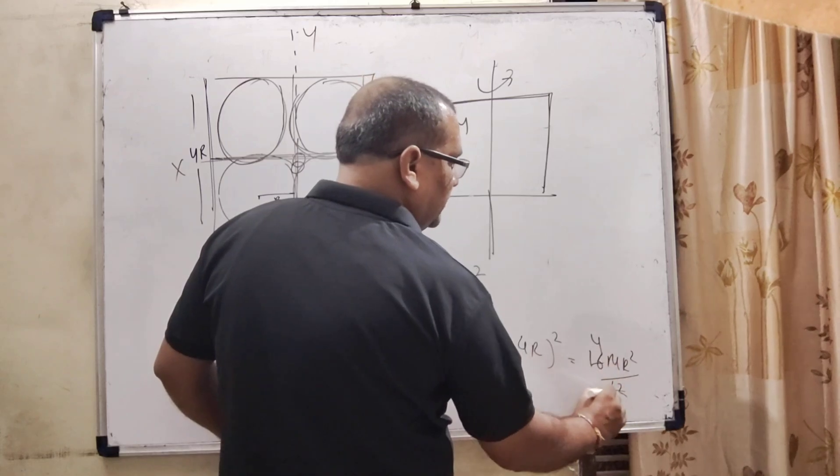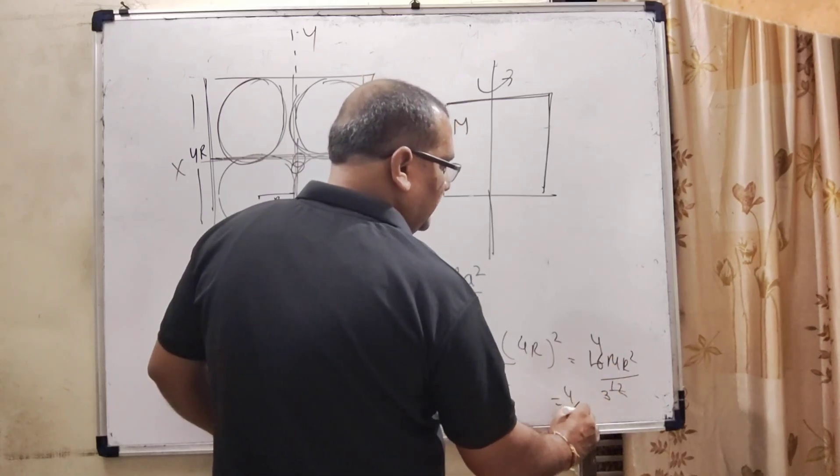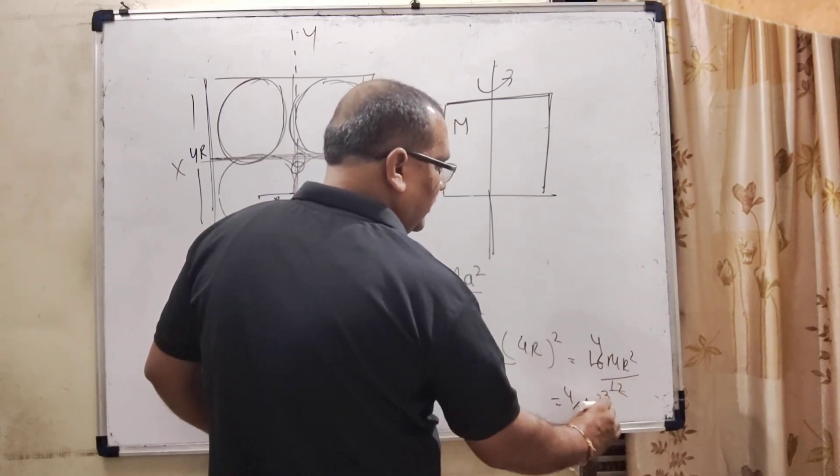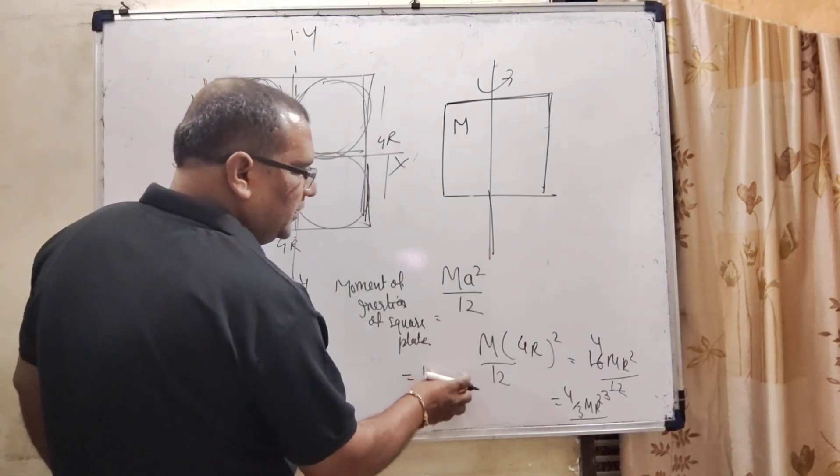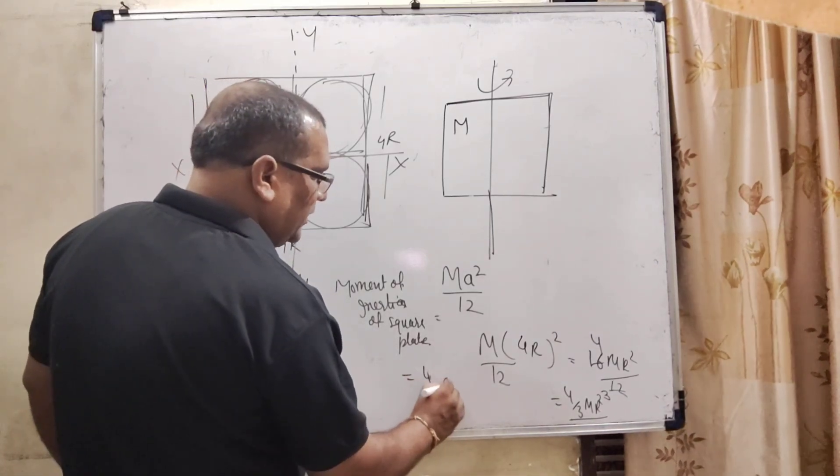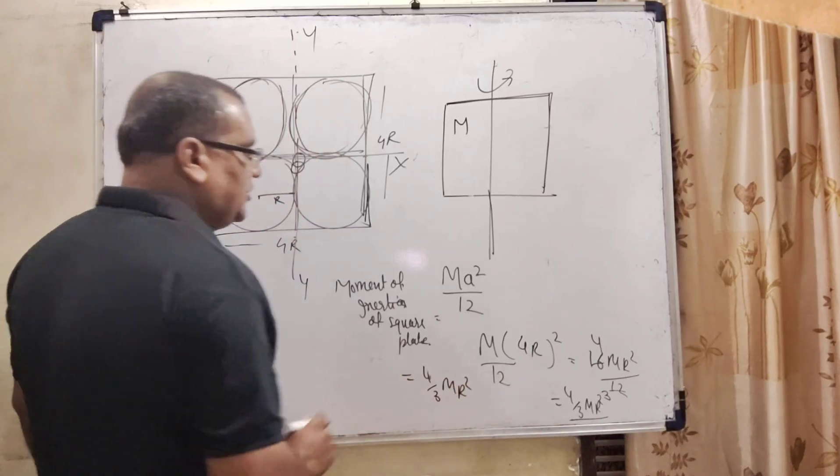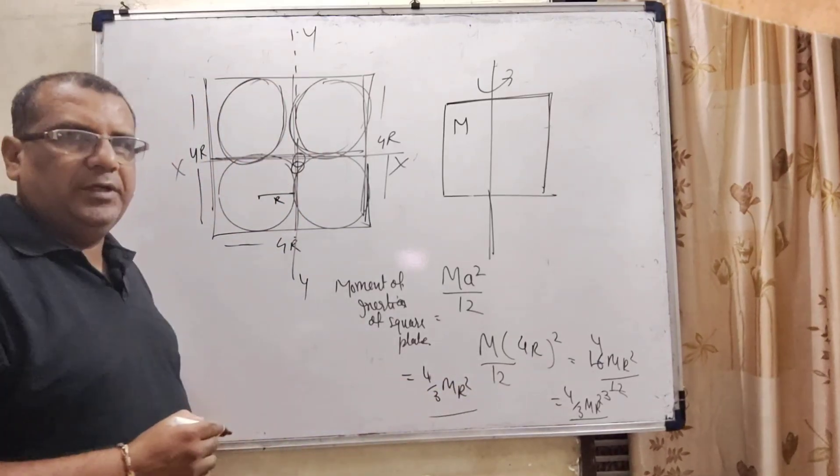This is the formula. Here the value is 4 by 3 MR square. Moment of inertia of the square plate is 4 by 3 MR square.